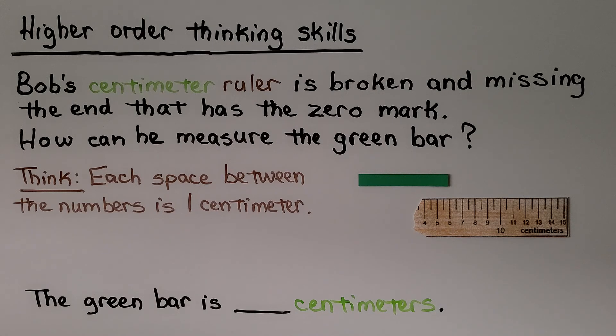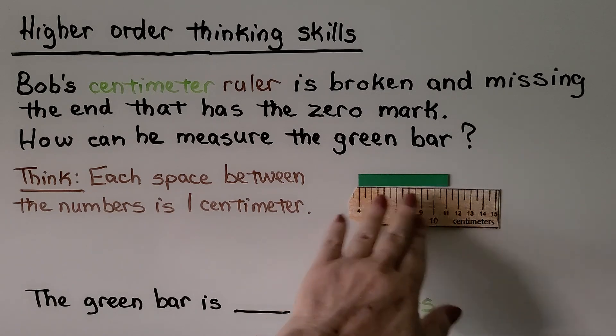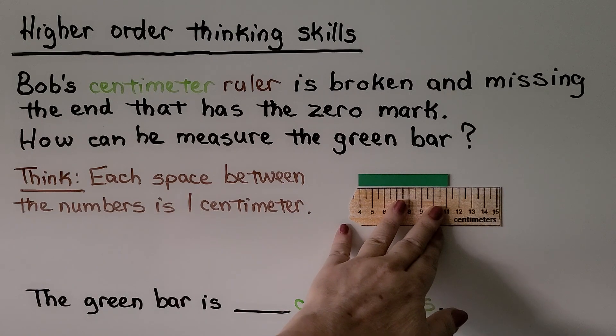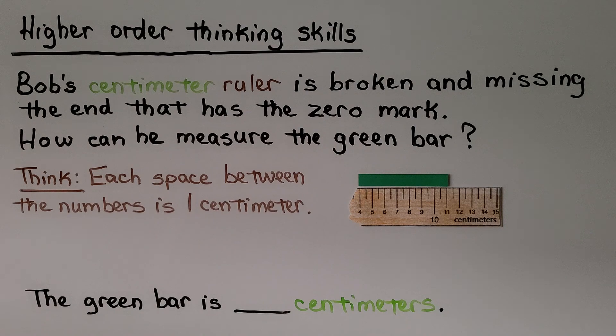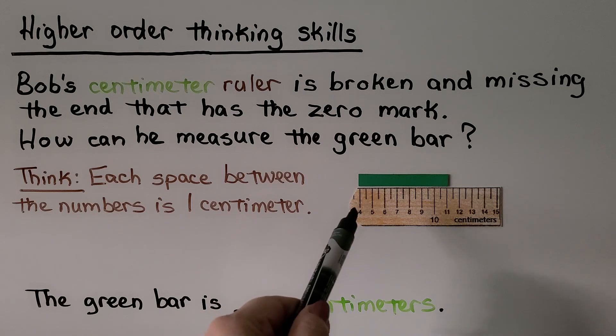Do you have any idea of how Bob can measure the green bar? Well, he can actually line it up so that the 4 is the zero mark. Each space is 1 centimeter. He can count the spaces.